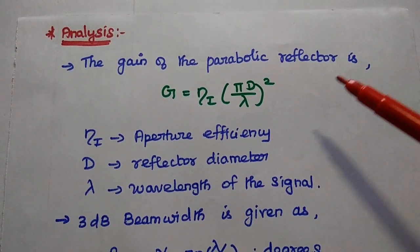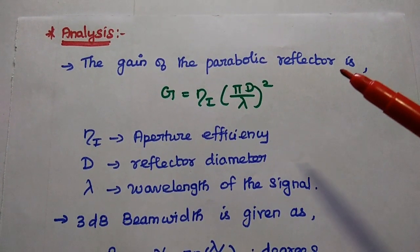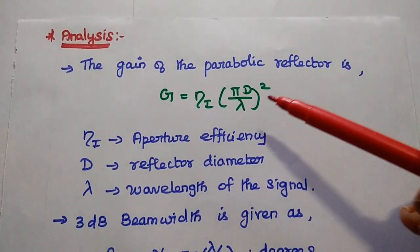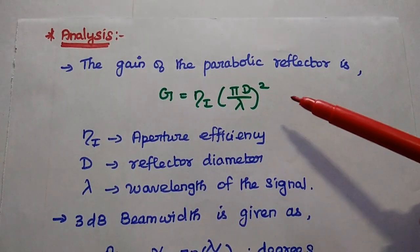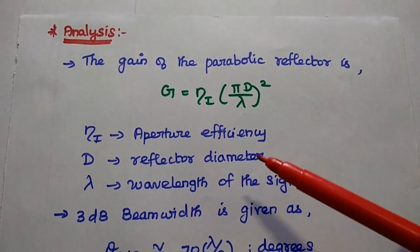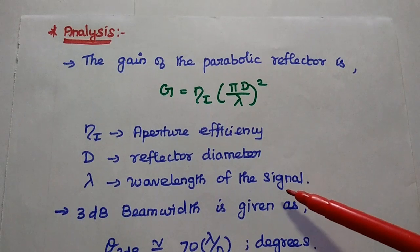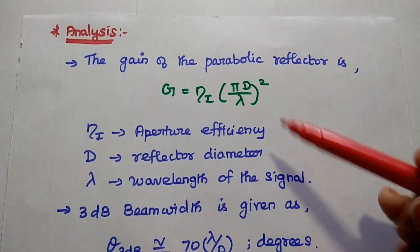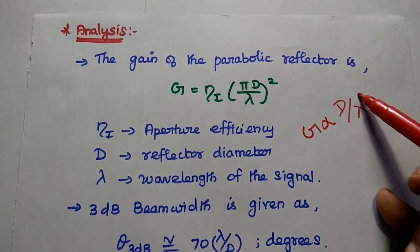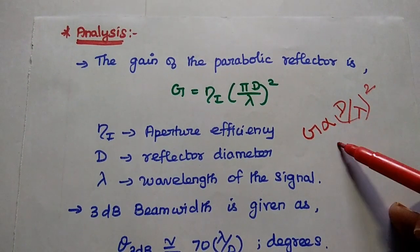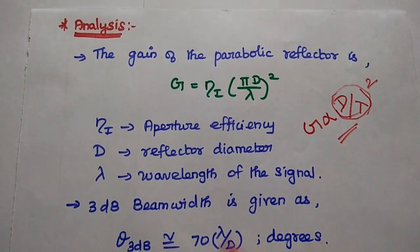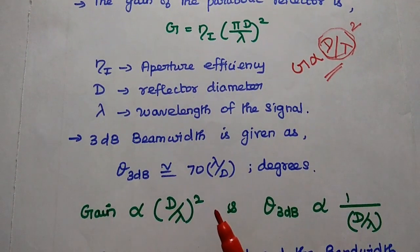Next, the analysis of the antenna subsystem. The gain of the parabolic reflector is given by G = η(πd/λ)², where η is the aperture efficiency, d is the reflector diameter, and λ is the wavelength of the signal. So the gain is directly proportional to (d/λ)², and this ratio is very important in antenna design for satellite systems.